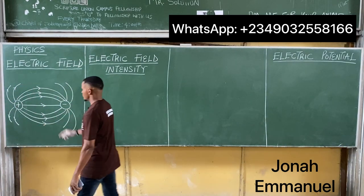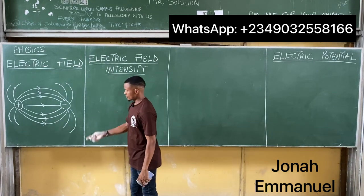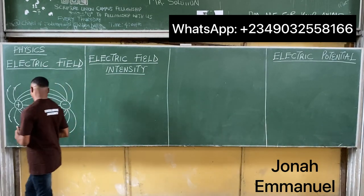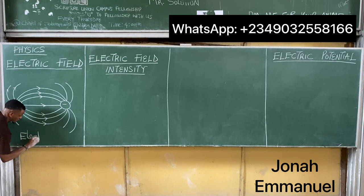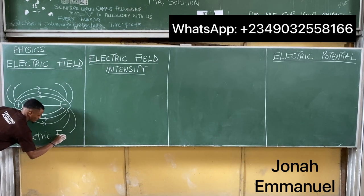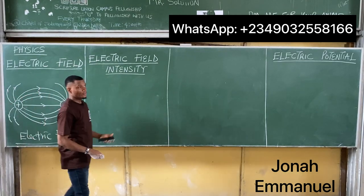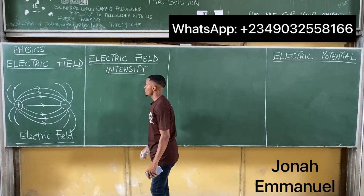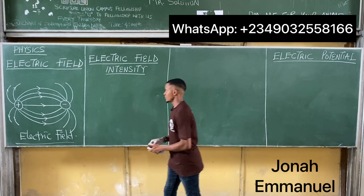So this is what an electric field looks like. This is how you represent an electric field in a diagrammatic form. That's the first one, electric field. Let's talk about the next one: electric field intensity.